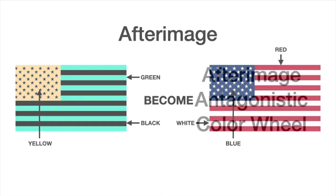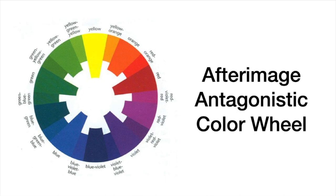Now, the opposing colors, the antagonistic colors, are represented on a color wheel. And so you can see here that opposite of yellow is blue, opposite of red is green, and opposite of white is black.